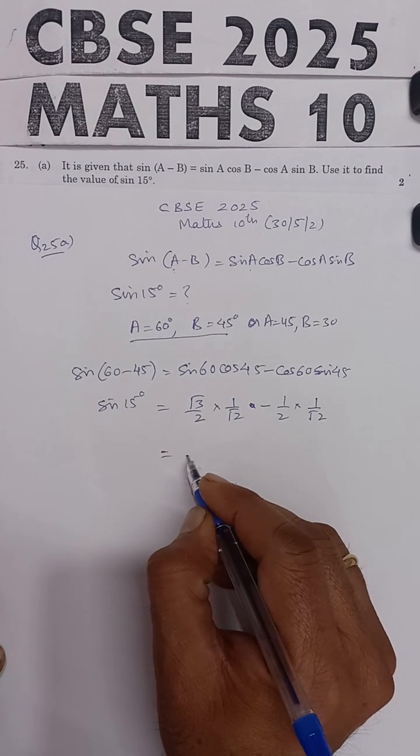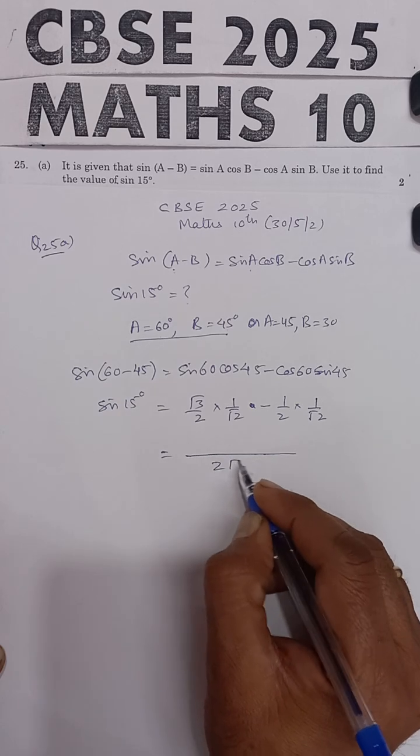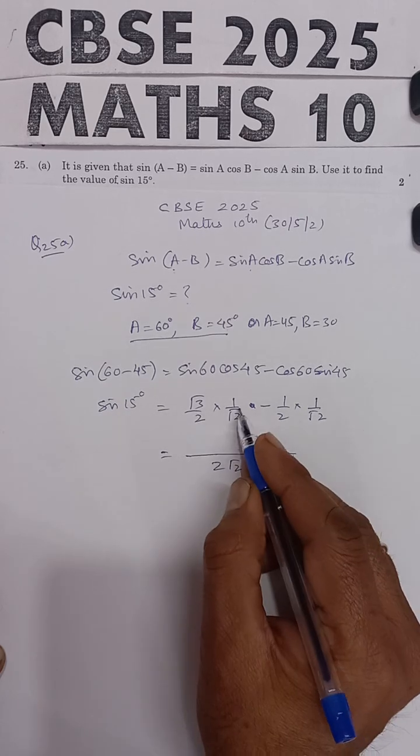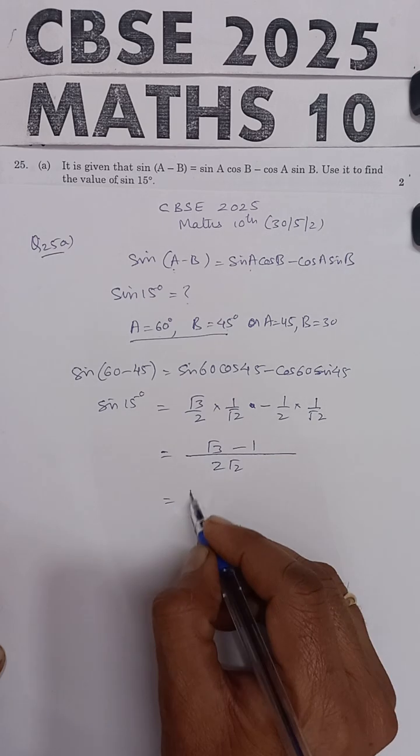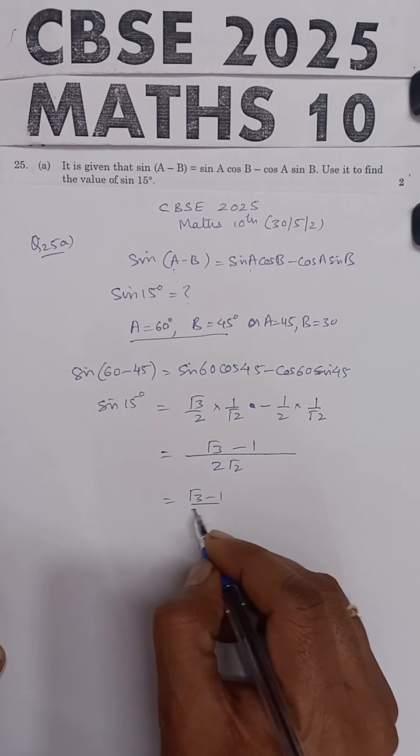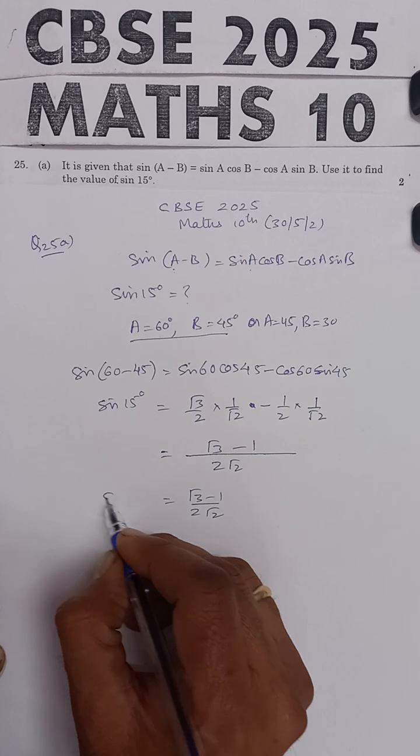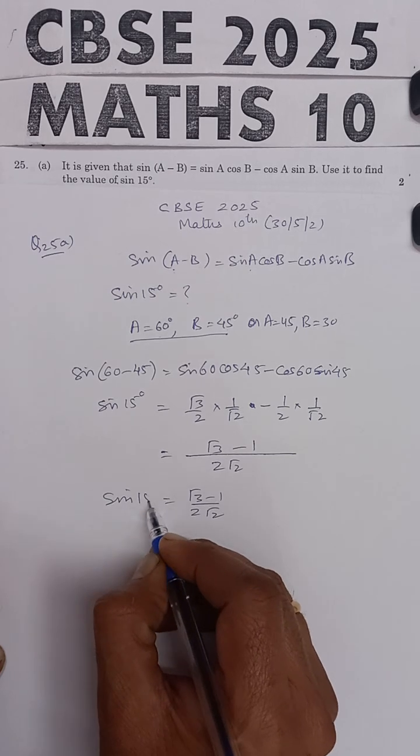Ab ye kitna jayega? The LCM will be 2 root 2. On top, root 3 into 1 will be root 3, minus 1 into 1 is 1. So, root 3 minus 1 upon 2 root 2 is the value for sine 15 degrees.